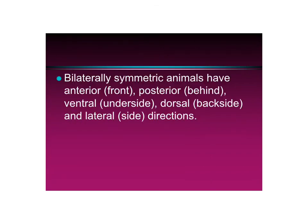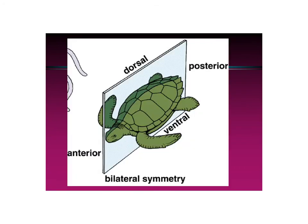Bilaterally symmetric animals have terms for directions — you may have seen this in the activity with the sharks. There's anterior, or front; posterior, or behind; ventral, which is the belly or underside; dorsal, which is the back; and lateral, which is on the sides. You only see this in bilateral symmetry. Here's what that looks like in a turtle: we have the belly — the ventral — the dorsal — the back — and posterior and anterior.